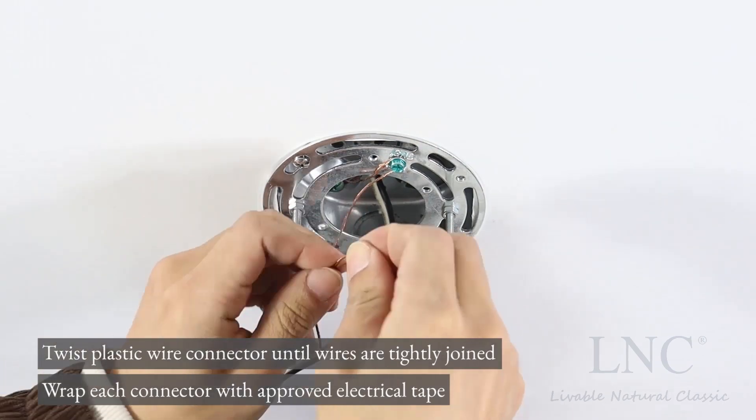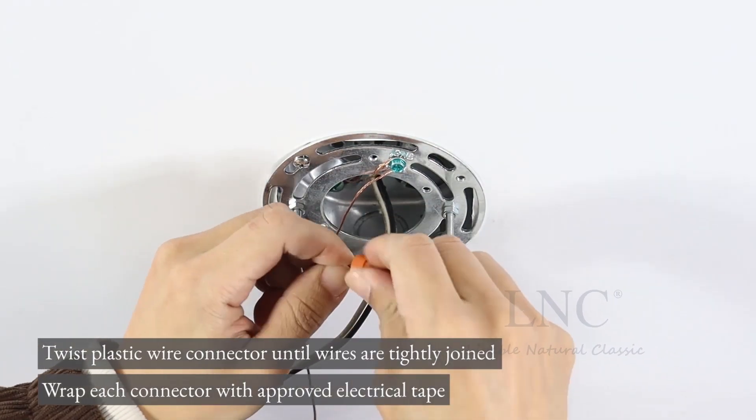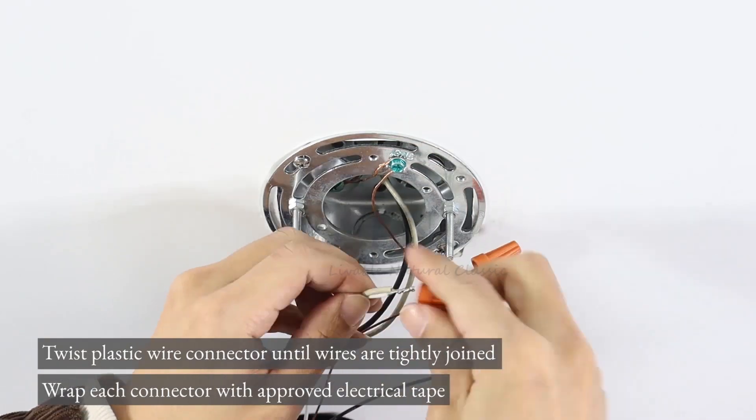Twist plastic wire connector until wires are tightly joined. Wrap each connector with approved electrical tape.